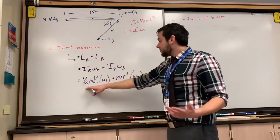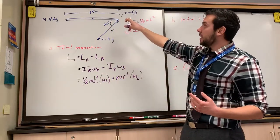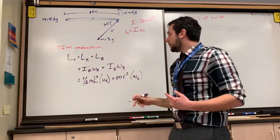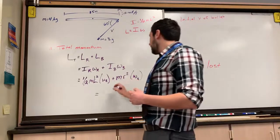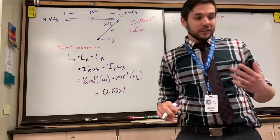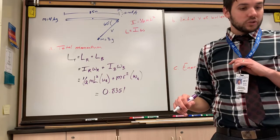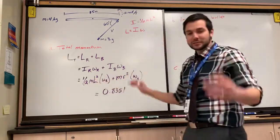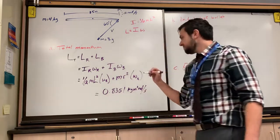Now we know all the values. L is 0.5 meters (the full rod length) and R is 0.25 meters (the radius from the axis of rotation to the bullet impact point). Using (1/12)mL² for the rod and mR² for the bullet, both multiplied by 10 rad/s, we get a total momentum of 0.8351 kilogram·meter²·radians per second.